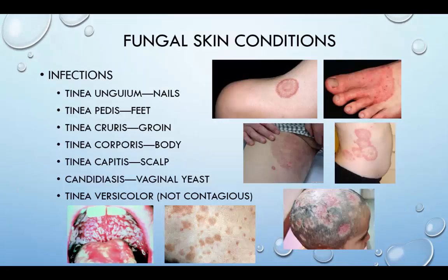Tinea unguium is a fungal infection of the toenails. It presents as yellowing of the nail, separation of the nail plate from the nail bed, and accumulation of subungual debris. Treatment will vary depending on the type of infection, the severity of the nail changes, and the personal preference of the supervising physician and patient.